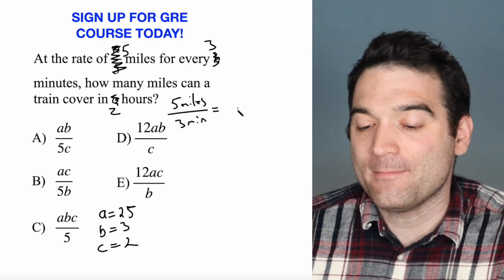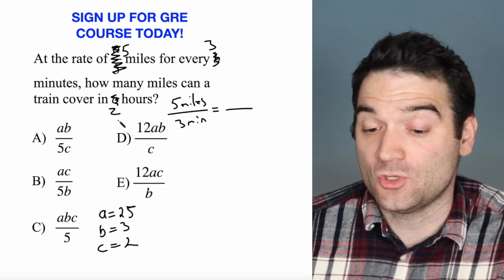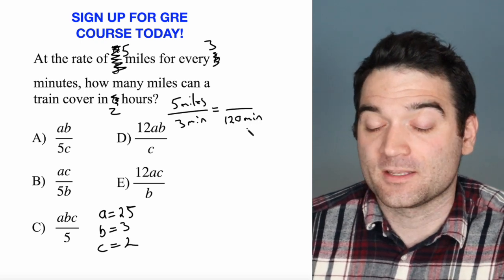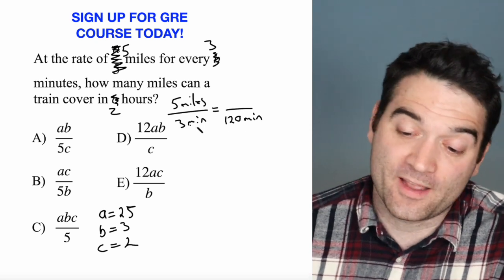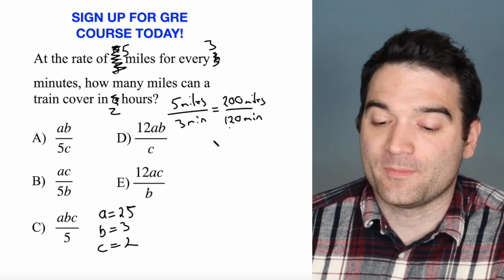I want to figure out how many miles get covered in 120 minutes. So 2 hours is 120 minutes, right? And if I do this cross-multiplication, 120 times 5 divided by 3, what I find is that this is 200 miles.